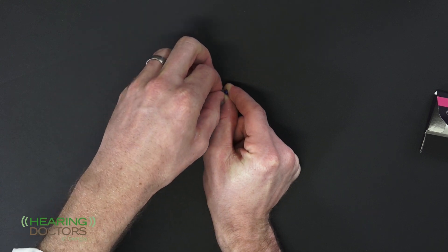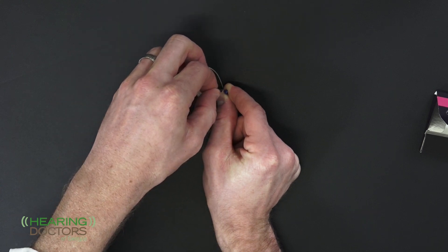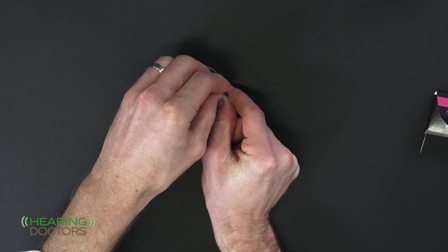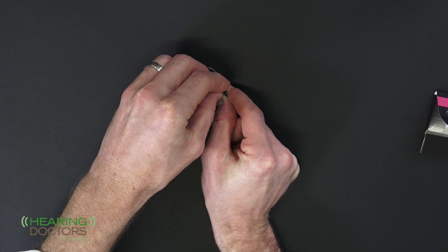You will then pull up, you will turn it over, and you will place the new filter in the receiver.